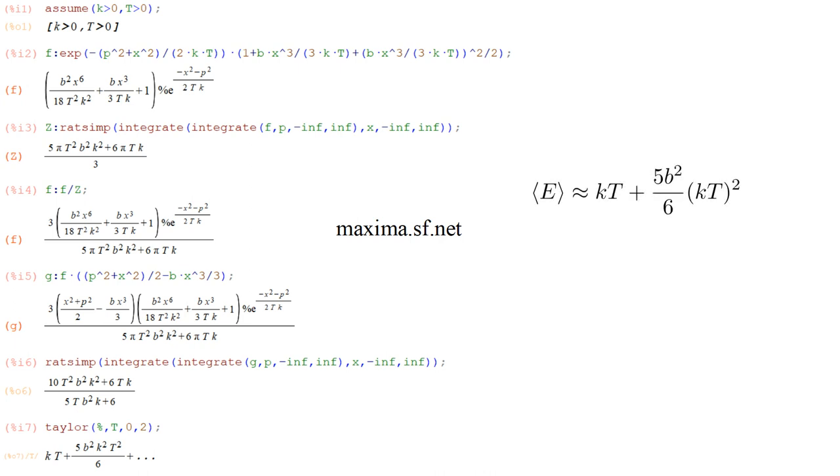Given the average energy of a single oscillator, the molar heat capacity is Avogadro's number, about six times ten to the twenty-three, times the rate of change of energy with respect to temperature. This works out to the gas constant r, times one, plus five b squared over three, times kt. Our prediction is that heat capacity should increase above the classical value r, linearly with temperature.